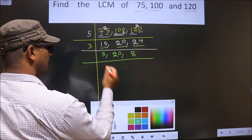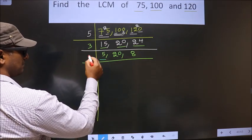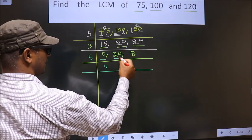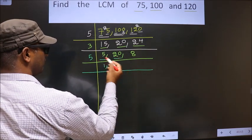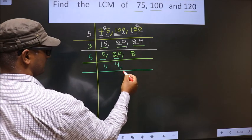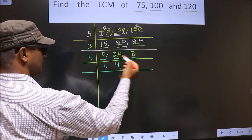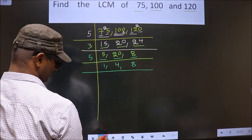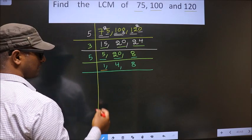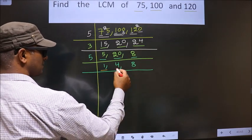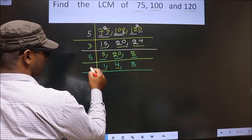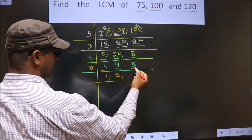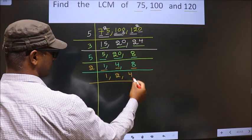Now we have 5. 5 is a prime number, so we take 5 once 5. The other number is 20. When do we get 20 in the 5 table? 5 fours are 20. Now for the other number, when do we get 8 in the 2 table? 2 fours are 8.